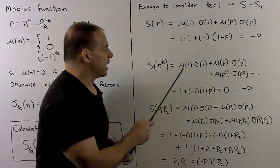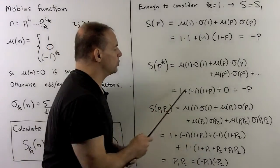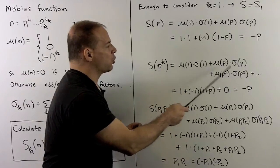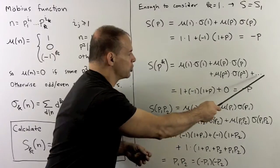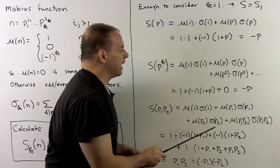What happens here, though, you'll note, same as before for the first two terms. But if I take mu of a square or higher power, that goes to zero. So all these higher terms drop out. And again, I'm going to get a minus p.